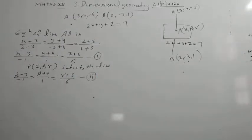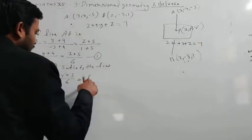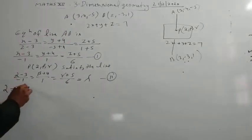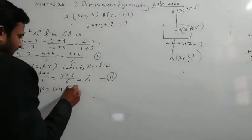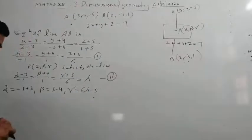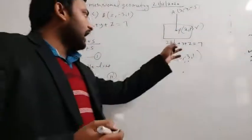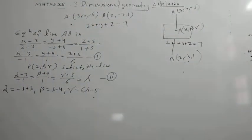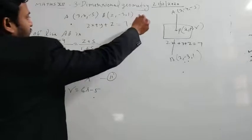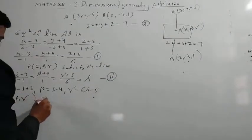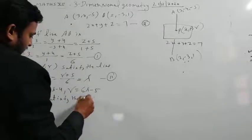We suppose equation two equals lambda and find the general point: alpha = minus lambda + 3, beta = lambda minus 4, gamma = 6 lambda minus 5. This is our general point on the line, and this is the coordinate of point P. Since point P also satisfies the plane equation, we can write 2 alpha + beta + gamma = 7.